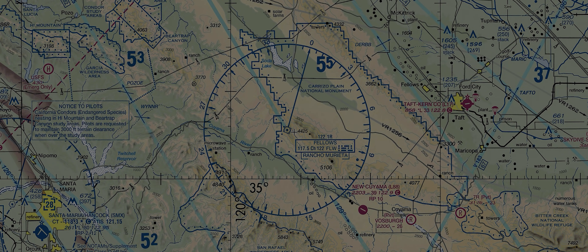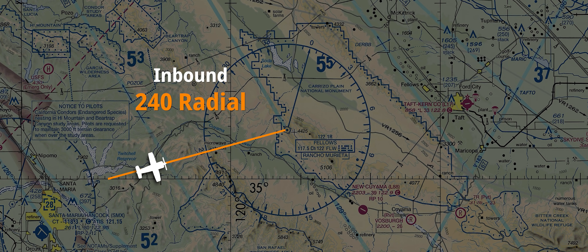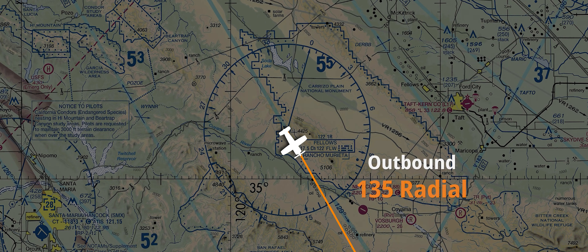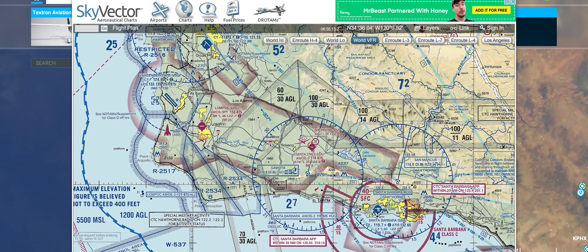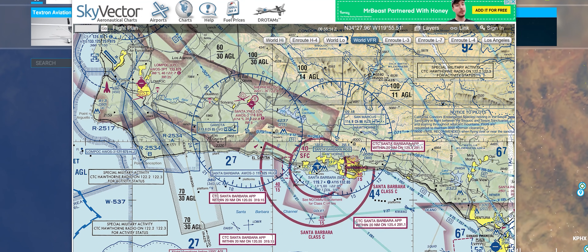When we're flying a VOR-based flight path, we'll be choosing which radial we want to fly on — inbound or outbound — each leg of our flight. So let's go ahead and plan a flight from San Luis Obispo down to the Santa Barbara Airport.